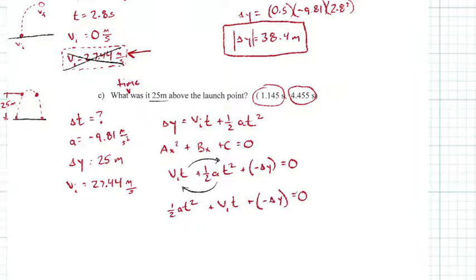This value is going to be our a value, that value is going to be our b, and everything in this parenthesis is going to be our c value. What's one half of a? We know a is negative 9.81 meters per second squared, so half of that would be negative 4.905 times t squared. Plus our Vi, which we believe to be 27.44.